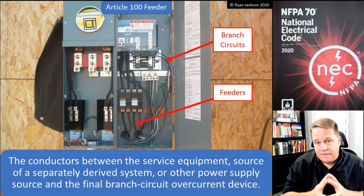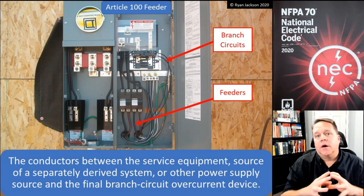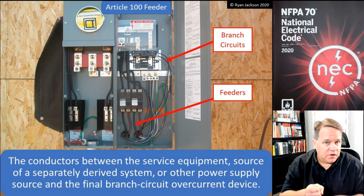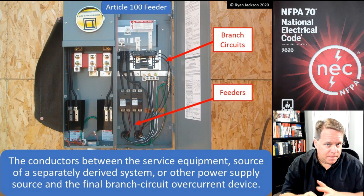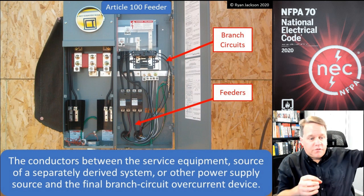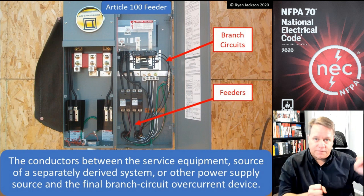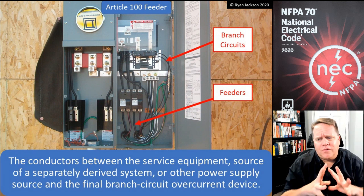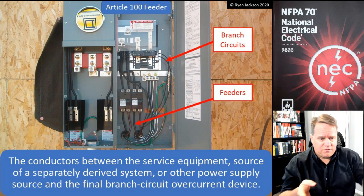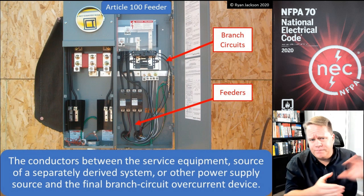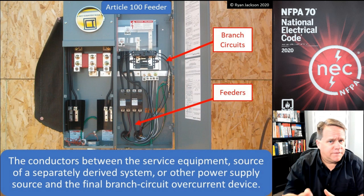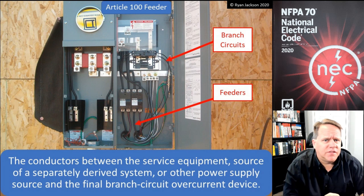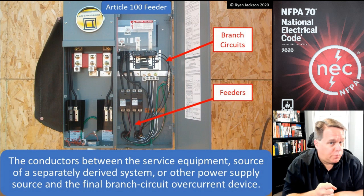It's really important that you understand this definition. When we talk about conductors for light and power, we break them up into three different types of circuits: branch circuits, feeder circuits, and service conductors. Service conductors come from the utility and end at the service disconnect — the first place where you can shut them off. Everything else (excluding control circuits and communications) is either a branch circuit or a feeder circuit.